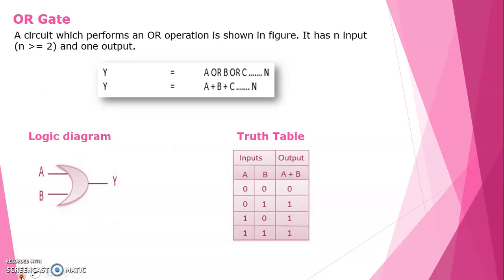Next is the OR gate. The circuit which performs an OR operation — that means addition operation; AND means multiplication and OR means addition. It has N inputs, where N is greater than or equal to 2. You can write Y equals A OR B OR C, otherwise A plus B plus C. Truth table: 0+0=0; 0+1=1; 1+0=1; 1+1=1. You can perform the addition operation.